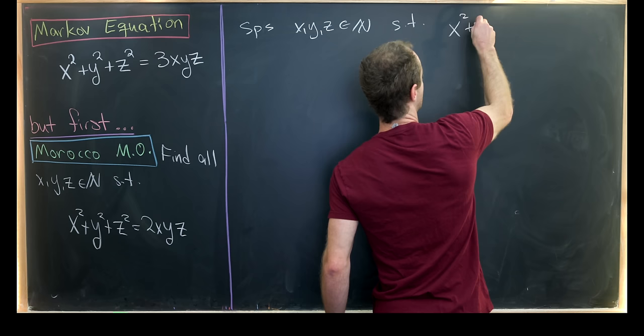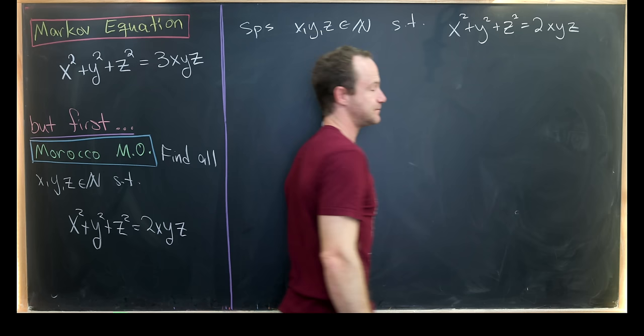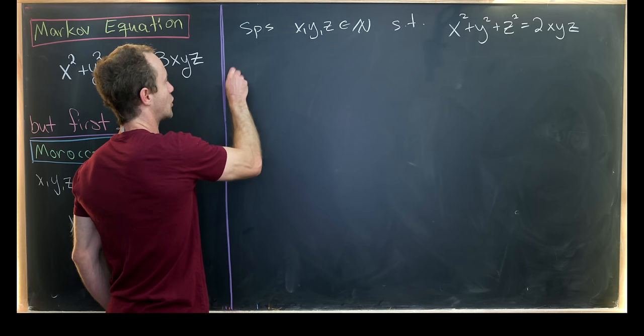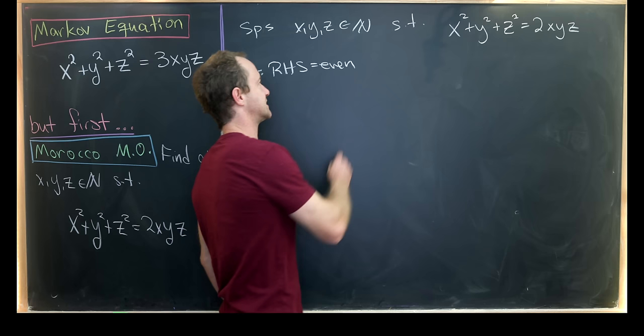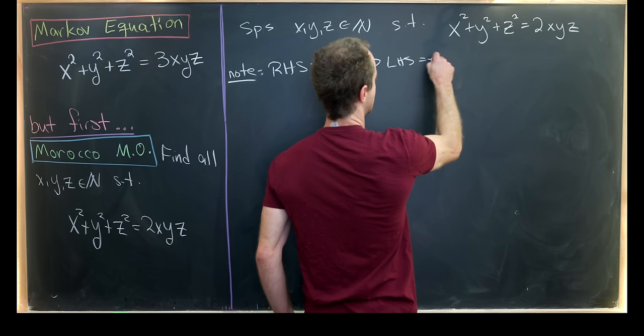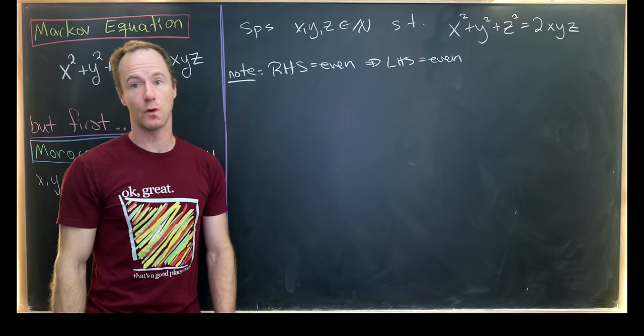So let's suppose we have x, y, and z, which are natural numbers satisfying this equation, such that x² + y² + z² = 2xyz. And now let's quickly notice that the right-hand side of this equation is most definitely an even number because we've got this multiple of 2 here. But since the right-hand side is even, that means that the left-hand side is also even. But what does that tell us?